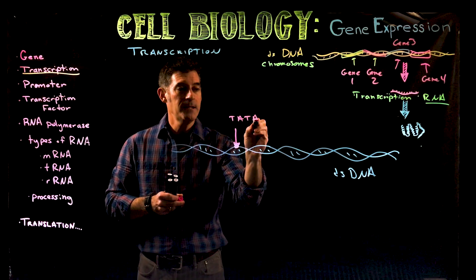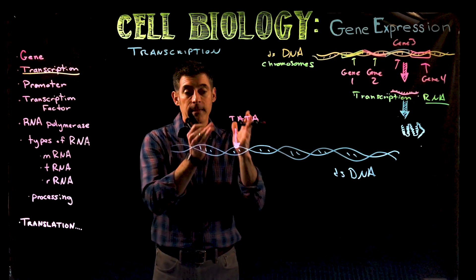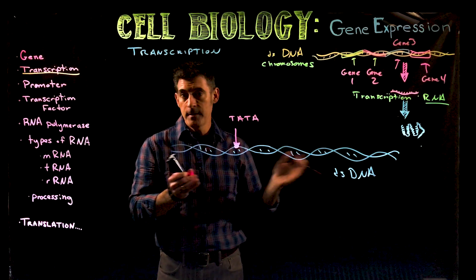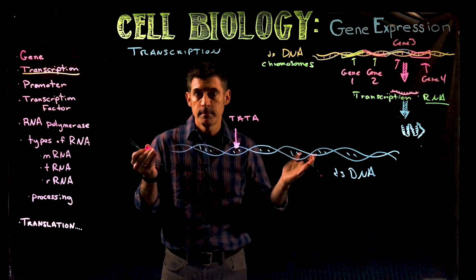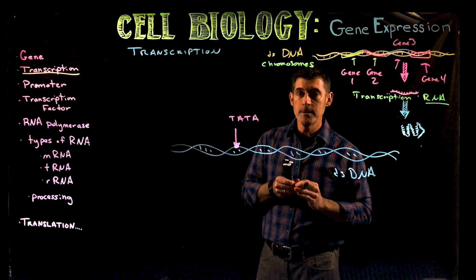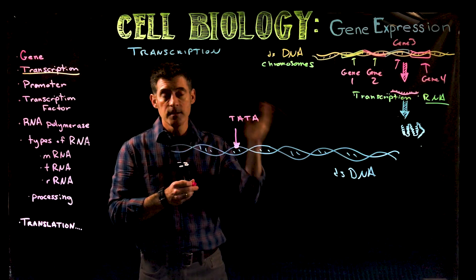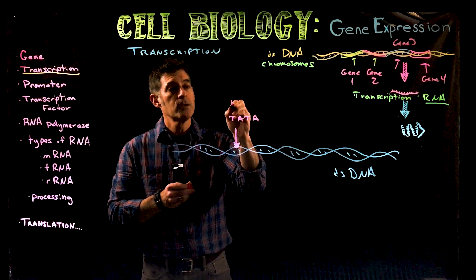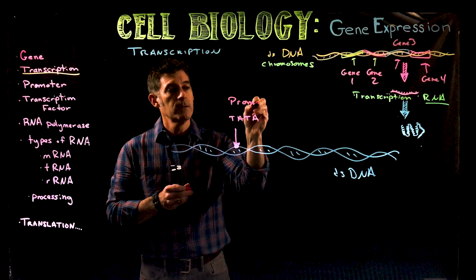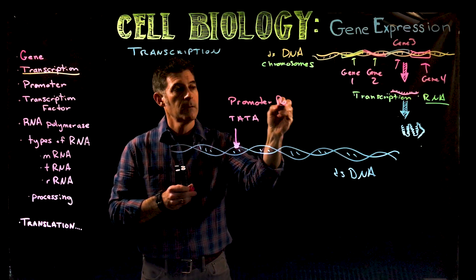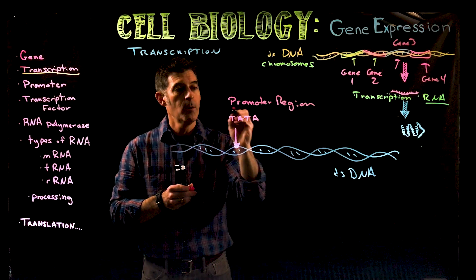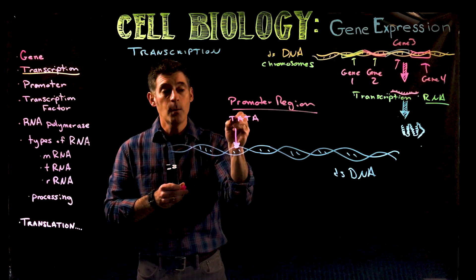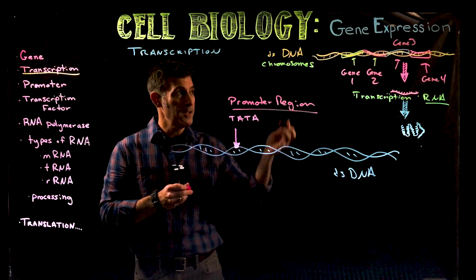The sequence TATA is common at the start of every single gene in every single organism that we know — there might be some very peculiar exceptions, but in general this region at the start of each gene is called the promoter region. The promoter region is a region of DNA that contains this TATA sequence, and that's going to be the start of a gene.